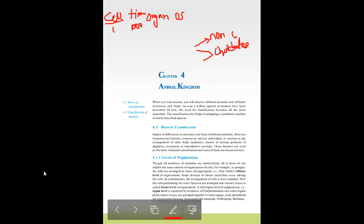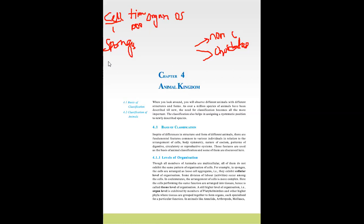What you need to remember at cellular level of organization is one cell is doing everything — example is sponges, phylum Porifera. At tissue level of organization, remember Ctenophora. Group of cells together form tissue and they divide their functions. Organ level is flatworms — phylum Platyhelminthes — where the organ does the work, and organ system level is mammals.